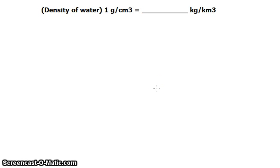Hi there, this is Ken. We have a very simple problem. The density of water, which is 1 gram per cubic centimeter, is converted to units in kilogram per cubic kilometer.